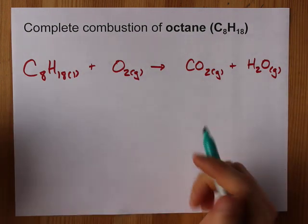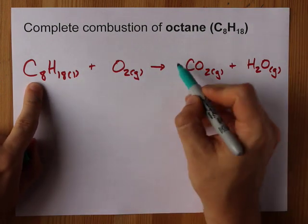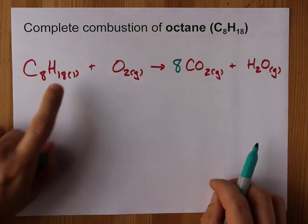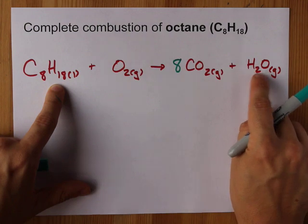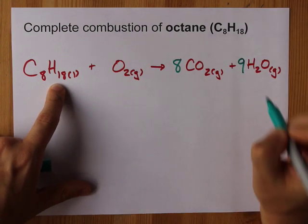Let's balance it together. 8 carbons on the left. I need 8 carbons on the right. 18 hydrogens on the left. I need 18 but they already come in packs of 2 so I only need 9 here.